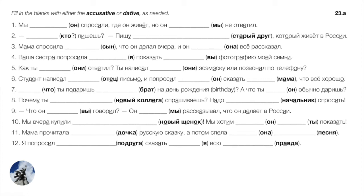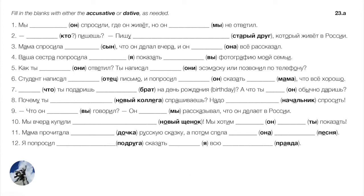Number twelve: I asked my female friend to tell me the whole truth. We're asking her — so подруга takes accusative. Then telling me — that's dative: Я попросил подругу сказать мне всю правду — всю правду is the direct object.